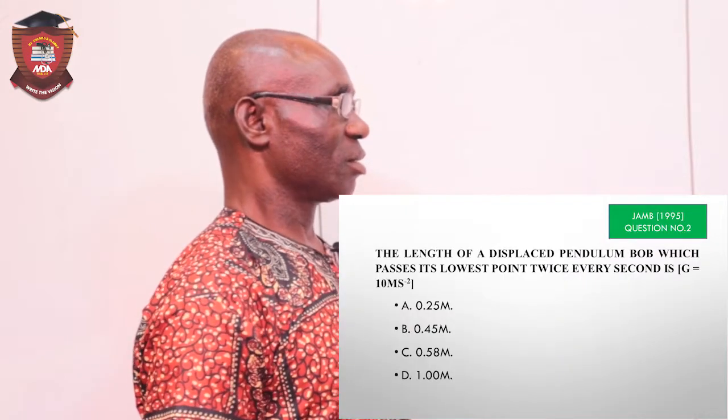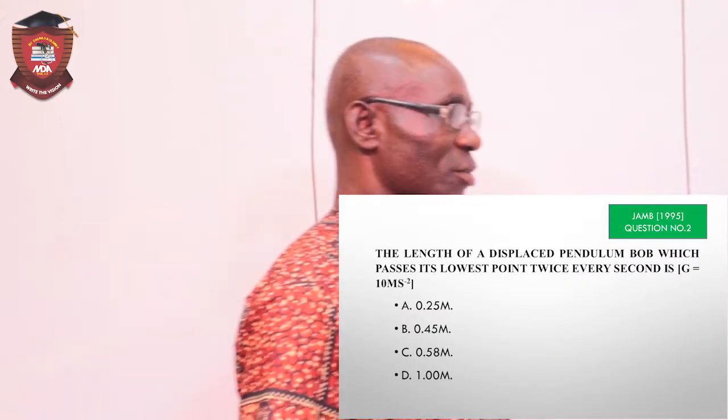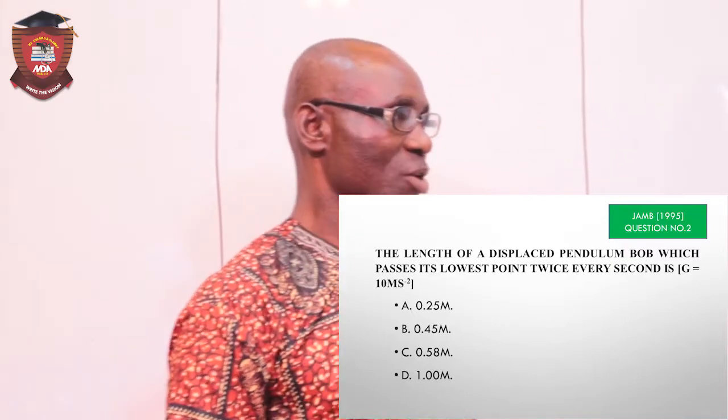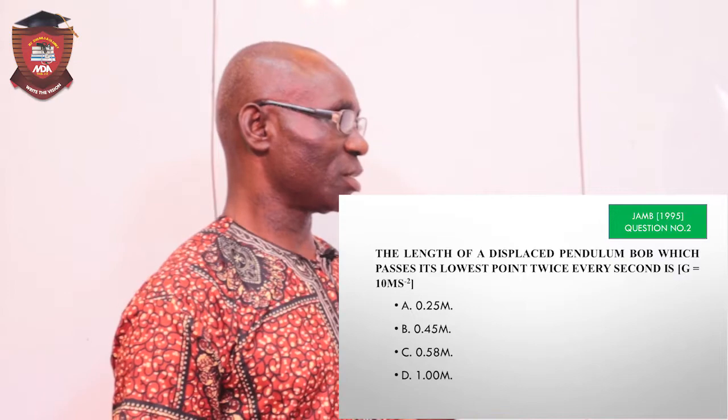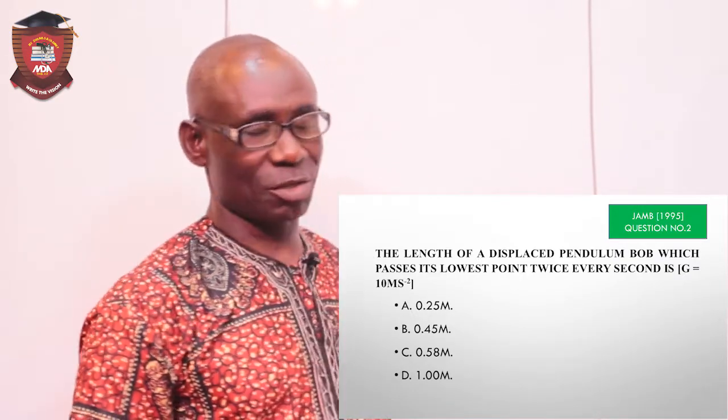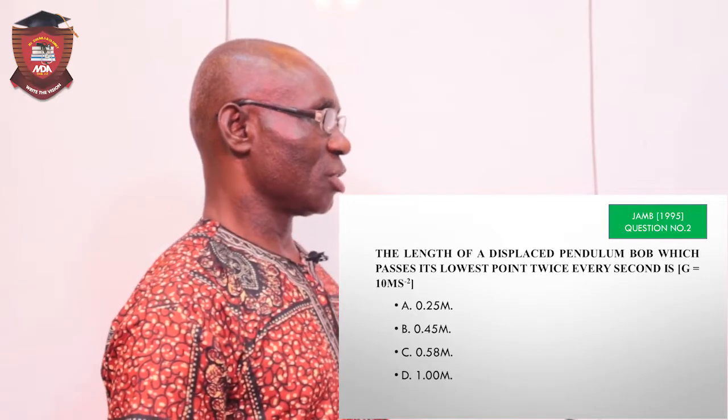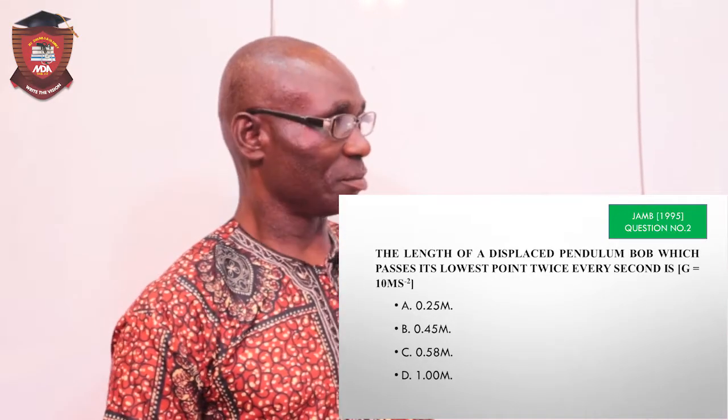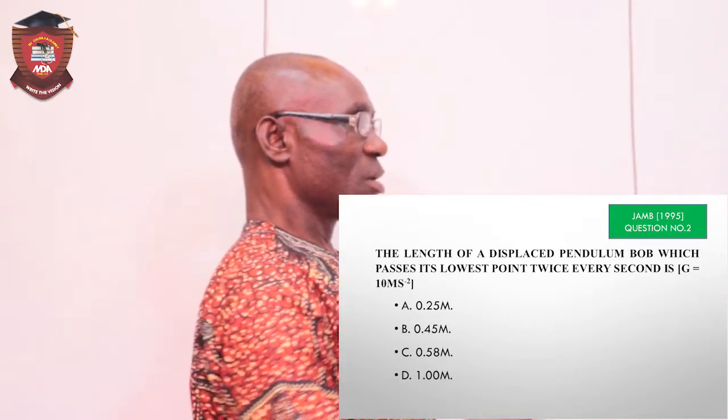And this question reads: The length of the displaced pendulum ball, which passes its lowest point twice every second, is... That's the question. And the value of G is given as 10 meters per second squared.